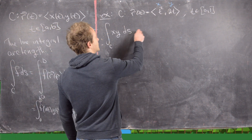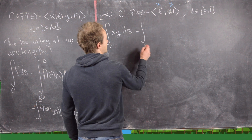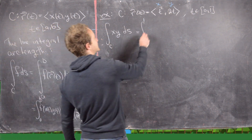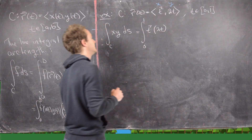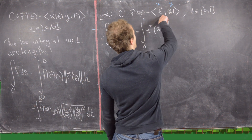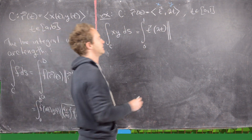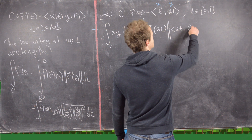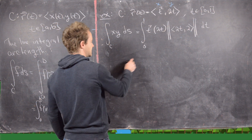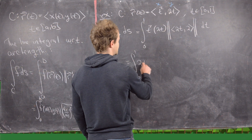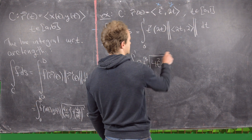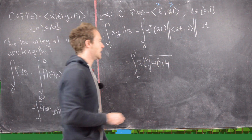This is going to be the integral from 0 to 1, because that's the interval defining this curve. Notice X equals T² and Y equals 2T, so X times Y equals T² times 2T. The derivative of R(T) is the vector (2T, 2), so the magnitude of R prime is the square root of 4T² plus 4, giving us the integral from 0 to 1 of 2T³ times the square root of 4T² plus 4, DT.